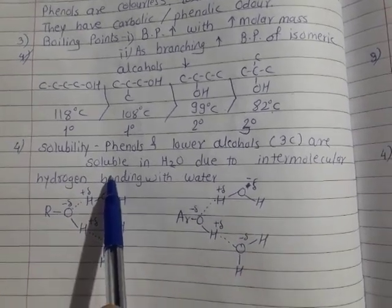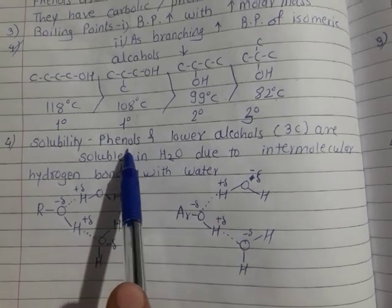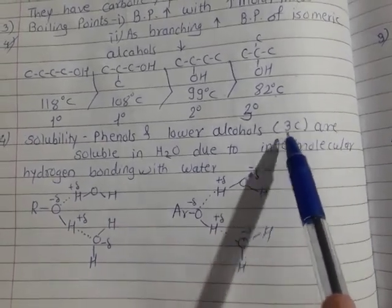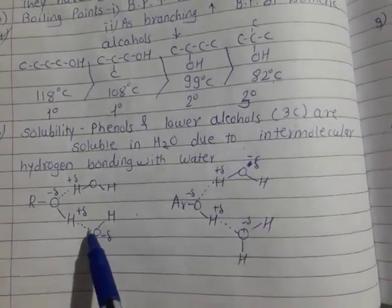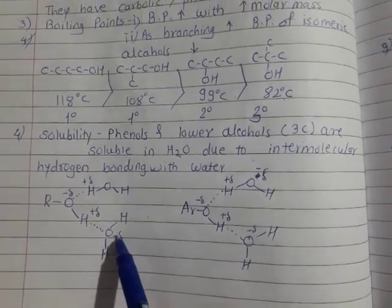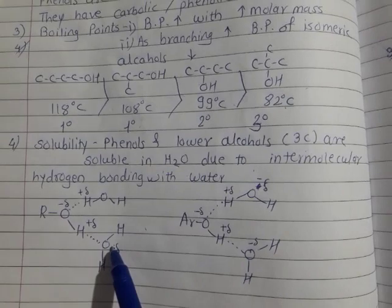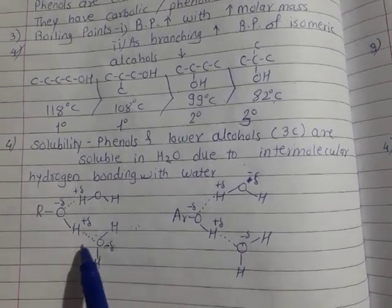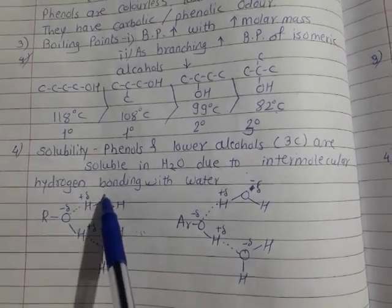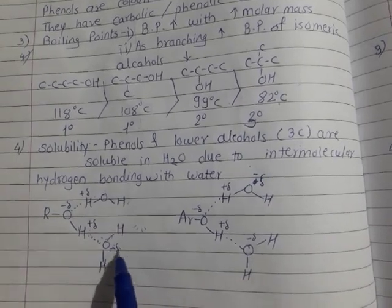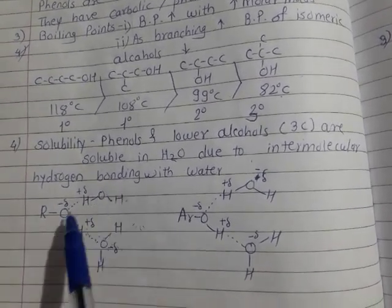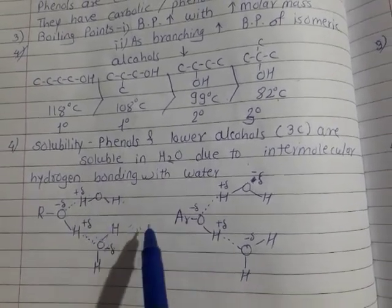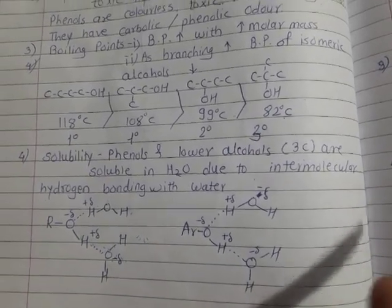The fourth property is solubility. Phenols and lower alcohols up to 3 carbons — methanol, ethanol, and propanol — are soluble in water because they form hydrogen bonding with water. The negatively charged oxygen and positively charged hydrogen create plus-minus attraction between the alcohol (ROH) and water (HOH) molecules. However, with increasing molecular mass, solubility decreases.